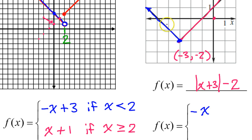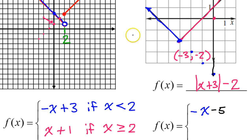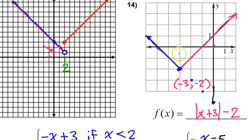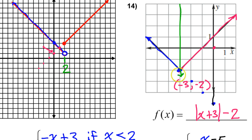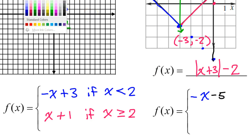Next I need the y-intercept of the blue portion. This ray does not touch the y-axis, but if I extend the line I can find where it would touch. Going down one over one, down one over one, down one over one — it's heading off the graph, but going down one over one one more time would hit the y-axis. Counting down: one, two, three, four, five — that's negative five, so minus five. The axis of symmetry is here at negative three, so the blue part is to the left of negative three. I'm going to say less than or equal to negative three.